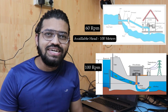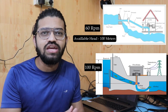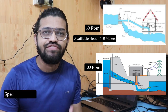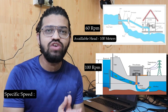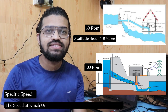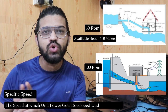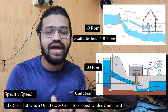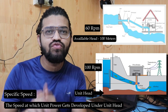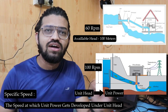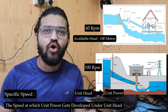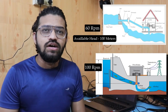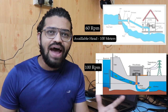The specific speed of a turbine can be defined as the speed at which unit power gets developed under unit head. So the unit head is the input and unit power is the output, and the corresponding speed at that operating point is known as the specific speed of the turbine.